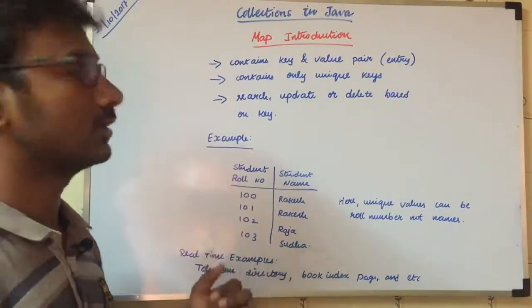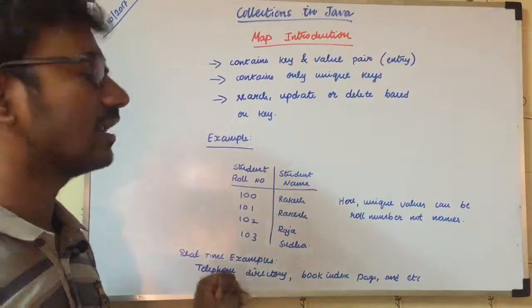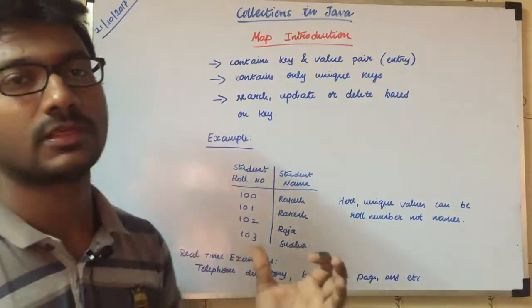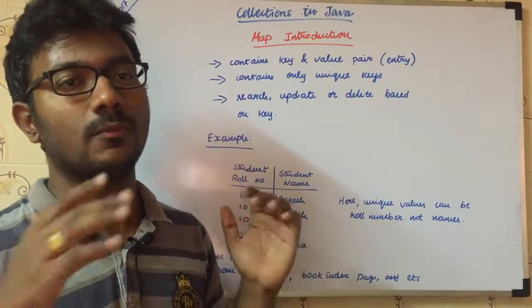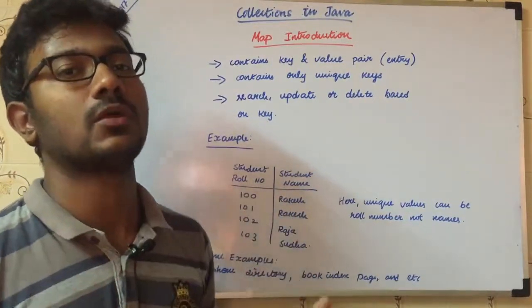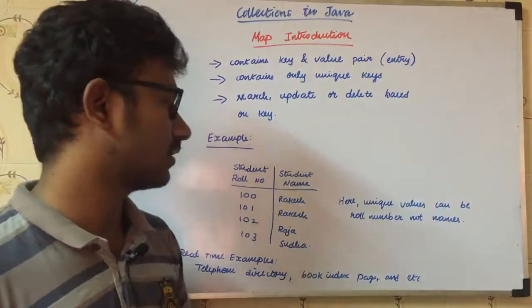Values need not be unique. A real-time example is a telephone directory: one address can have multiple phone numbers. The same address can have multiple phone numbers. So telephone directory is the best example.